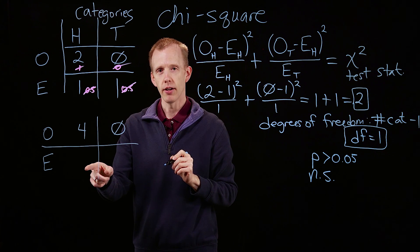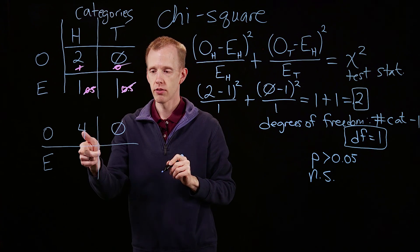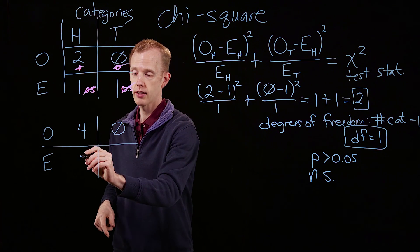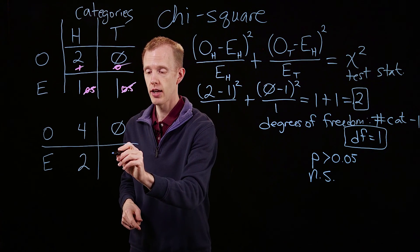What's the expected value? We expect heads, if we see four total observations, we would expect to see, on average, heads twice and tails twice.